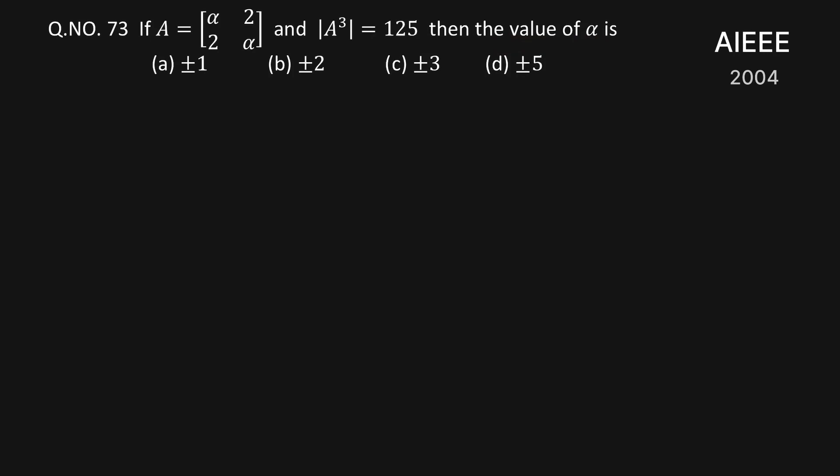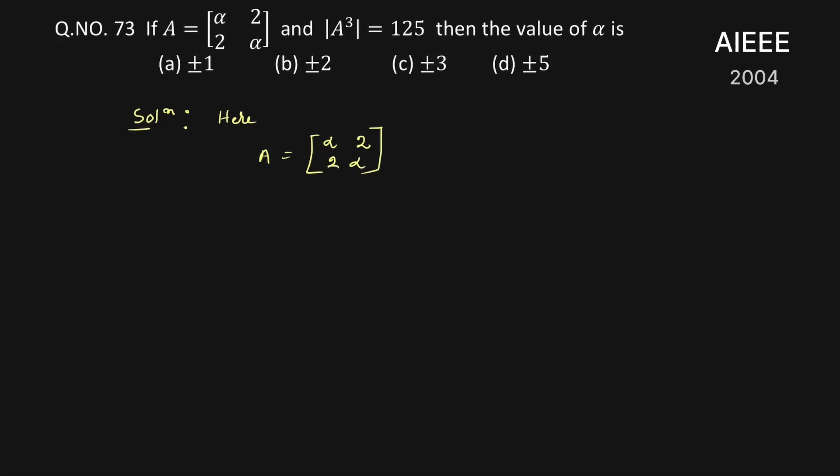Let's see the solution of this question. So here A is given which is equal to matrix of alpha 2, 2 alpha and also given that determinant of A cube which is equal to 125.